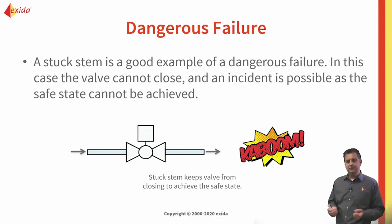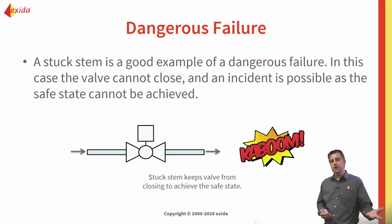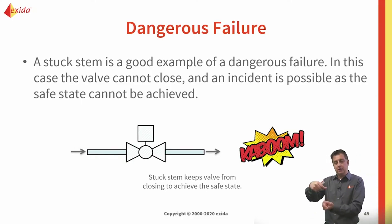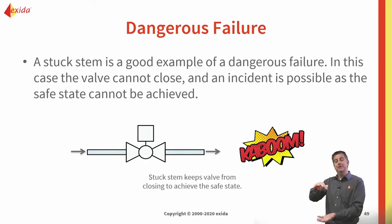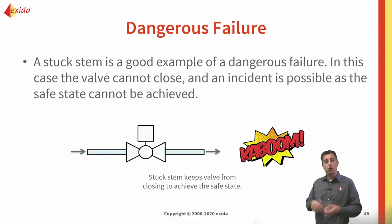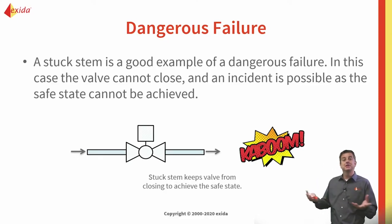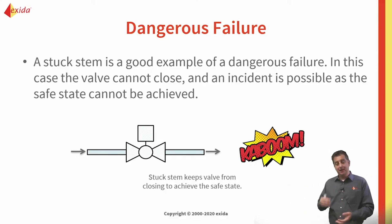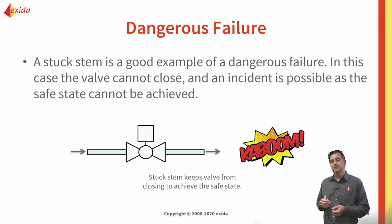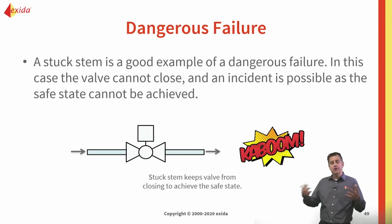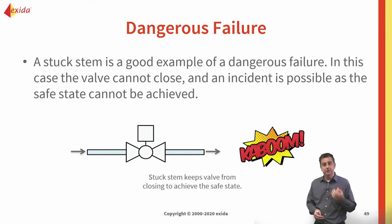That would be a dangerous failure. Examples include a stuck stem — you can remove the pressure from the actuator, maybe it's a spring return actuator, but the valve just sits there and doesn't do anything. Or maybe the spring in the actuator is broken and there's no force to drive the valve to the safe state. Those are two examples of dangerous failures.